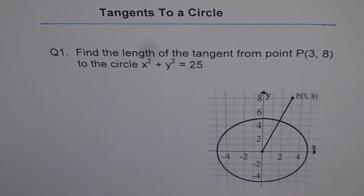Tangents to a circle, question 1. Find the length of the tangent from the point P (3, 8) to the circle x square plus y square equals to 25.